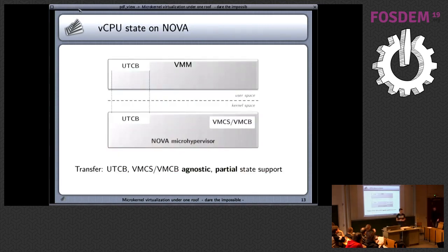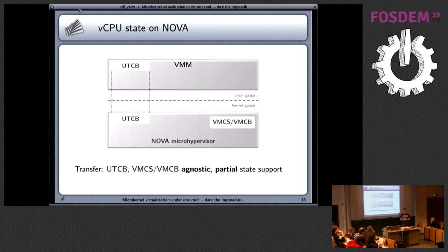The virtual machine monitor looks at the state, decides what to do, and emulates things as needed. Now I'd like to go through the differences between kernels. For the Nova hypervisor, state is transferred via the UTCB attached to each thread. The layout of the UTCB is agnostic regarding whether you're running on Intel or AMD — you don't see the differences in the layout. Also, if your VMM is clever enough, it can specify which state should be transferred, so you don't have to receive the whole state every time.